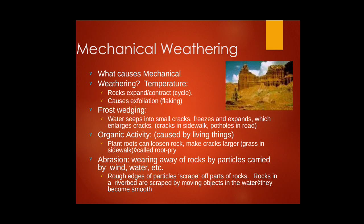Next is abrasion. When a rock is broken into pieces, those pieces are carried by wind and water and rub against other rock surfaces. This process is called abrasion. When it takes place continuously over a very long time, it results in the rough edges of rocks being smoothed to polished edges, as seen in river rocks and along wind pathways.